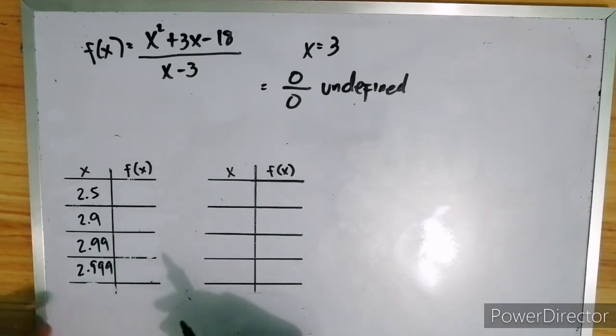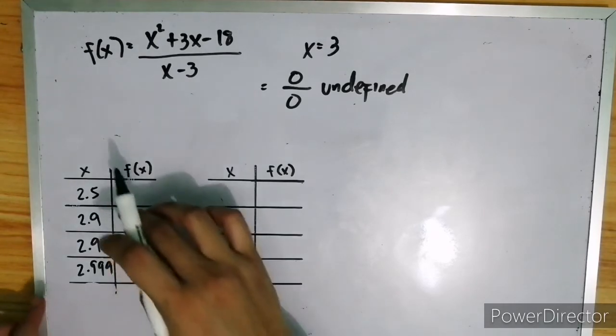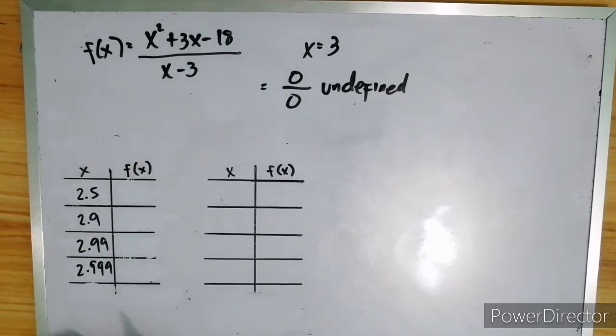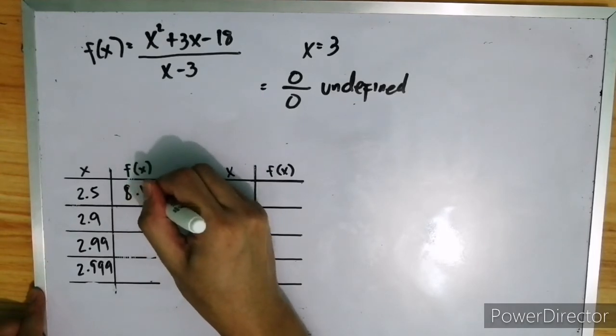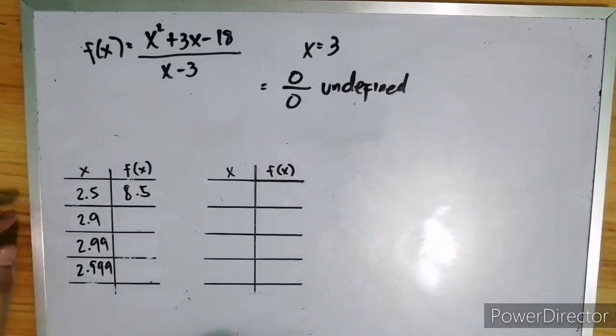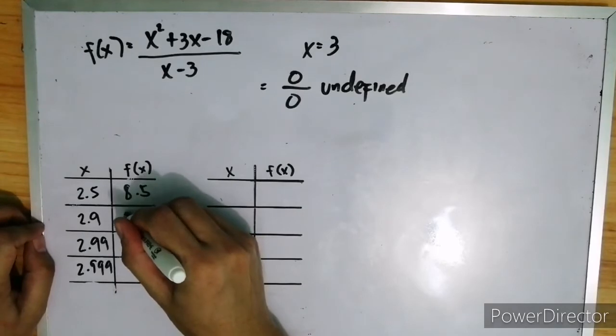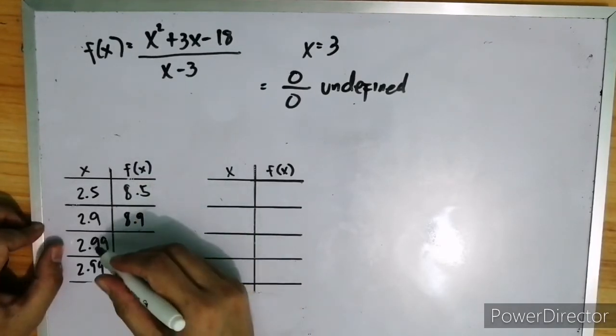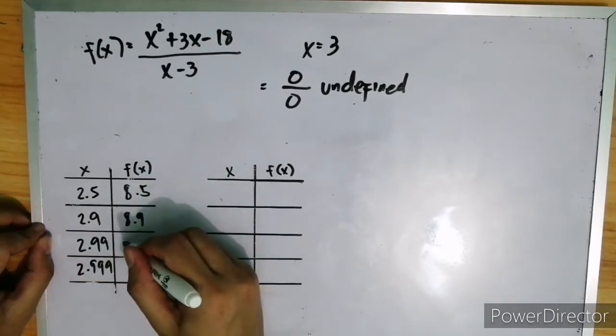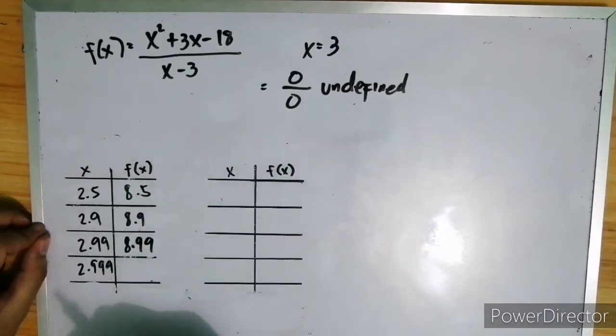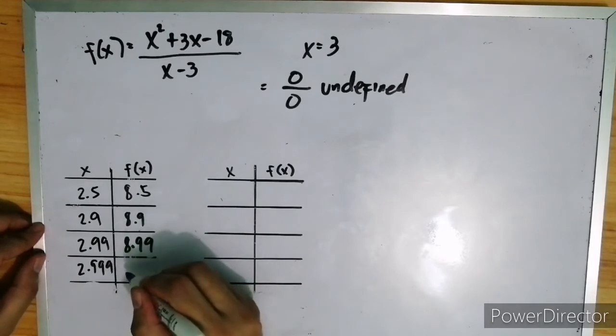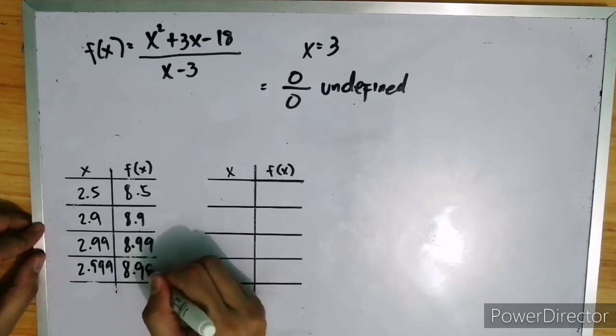If we have x equals 2.5, what will be the value of this function? That is 8.5. If we have 2.9, that is 8.9. If we have 2.99, that is 8.99. Then, for 2.999, we have 8.999.